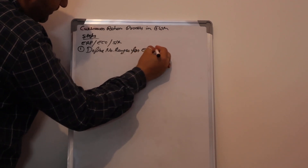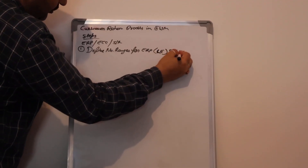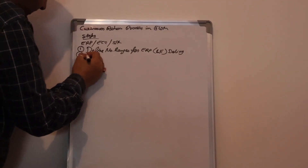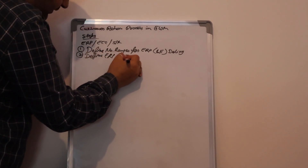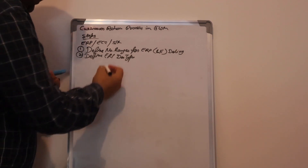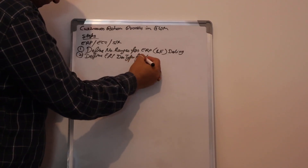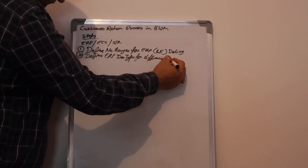ECC or ERP bracket LE delivery logistics execution ECC side. We need to define ERP document type for differentiation attributes. Define ERP document type, because through document type and item type, both layers will communicate with each other. Define ERP document type to differentiate attributes.